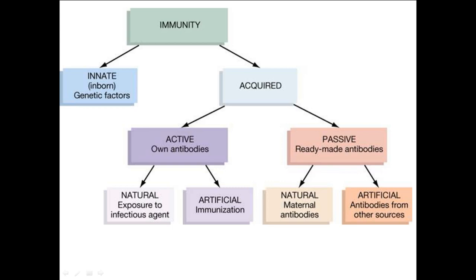The first type of passive immunity is natural, and that is where you get the antibody from your mother. During pregnancy, there is a link between the blood from the mother to the embryo and to the fetus, and therefore you will get the exchange of antibodies, so you will be born with some form of natural passive immunity.